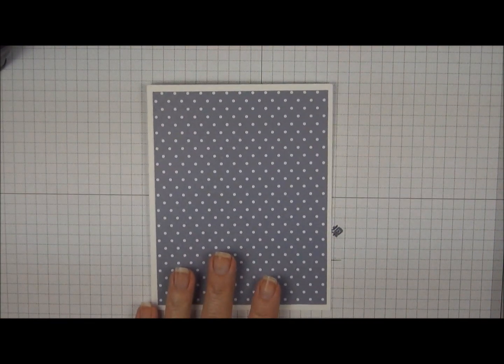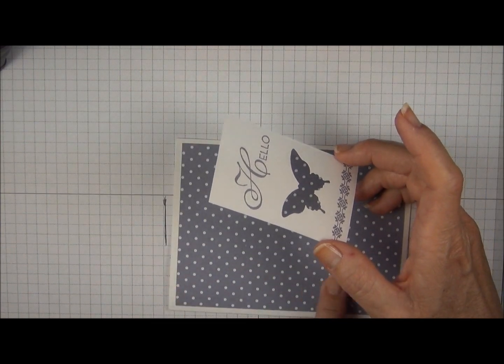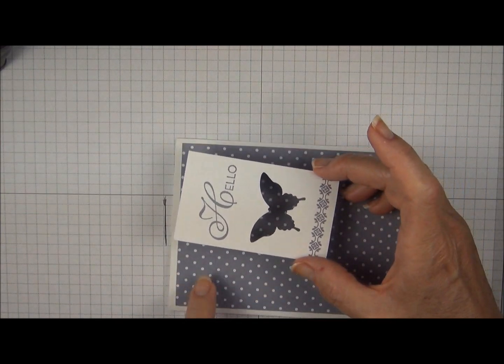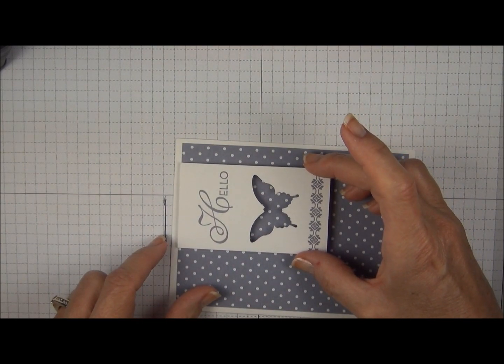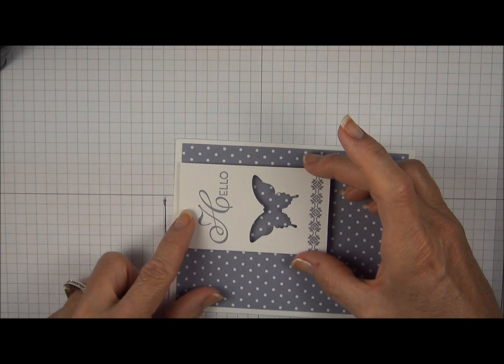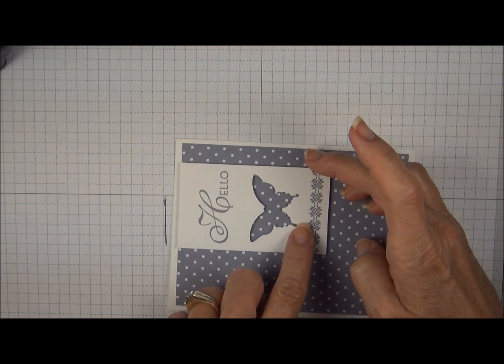We're going to go ahead and layer this onto the top of our card. Because we've got polka dots that are fairly symmetrical, we can use them to help us line up this part here. So just go a little bit above the paper and then you can see how I can follow this row of dots all the way down.